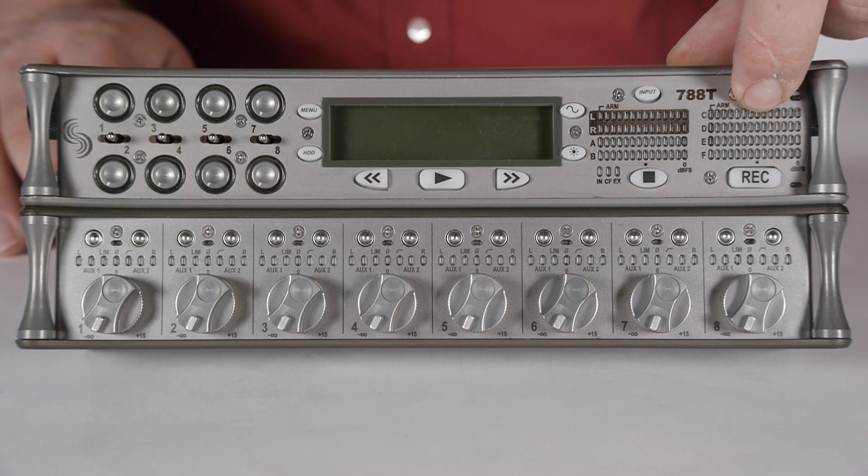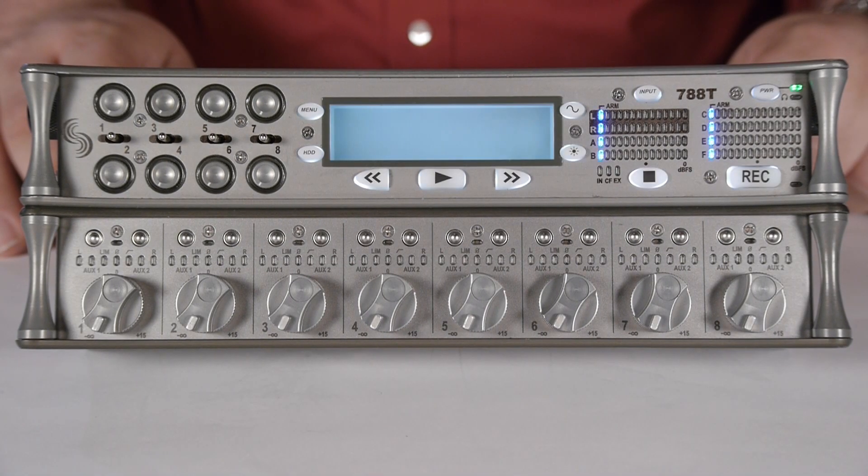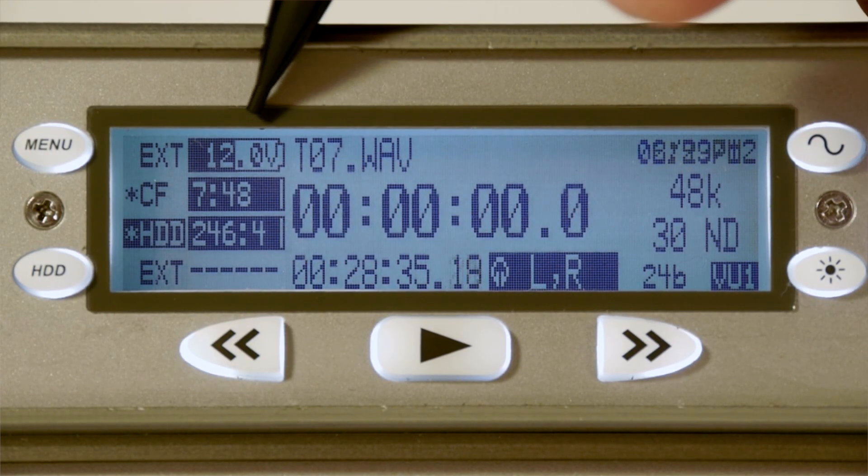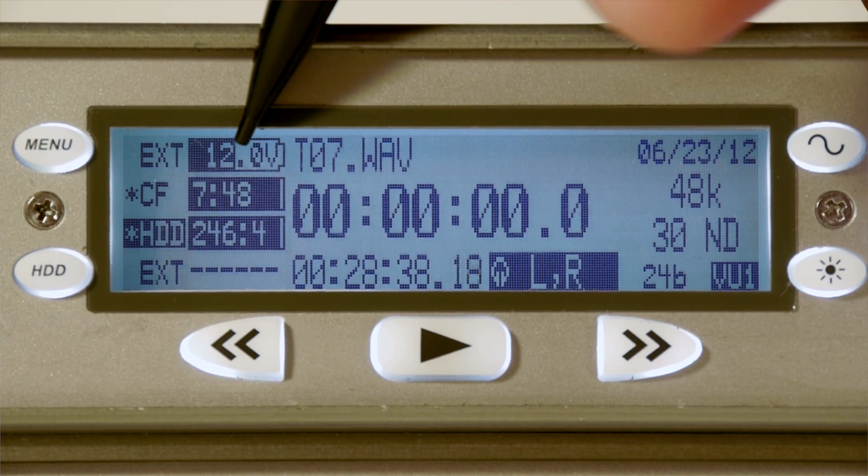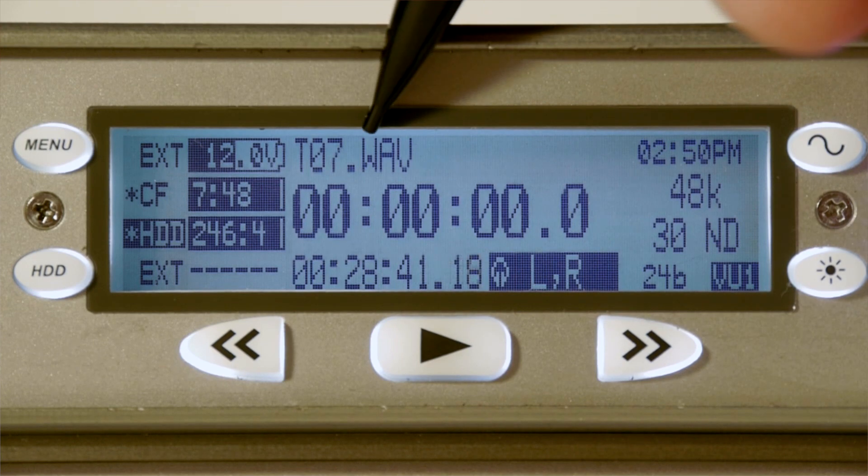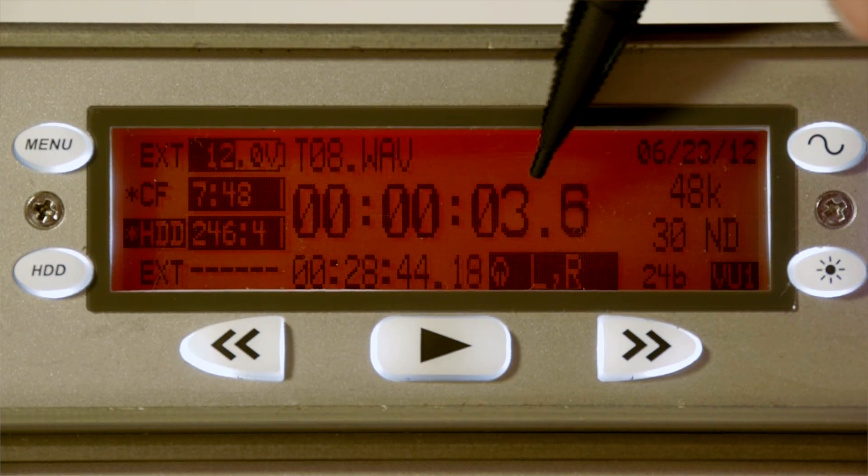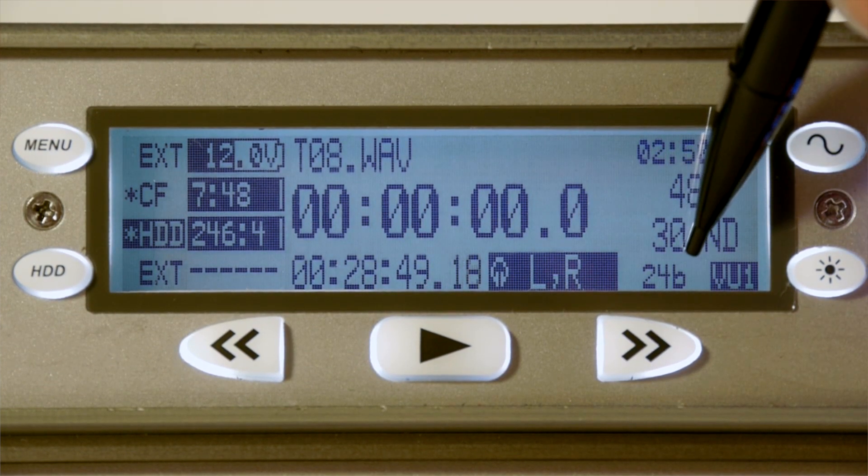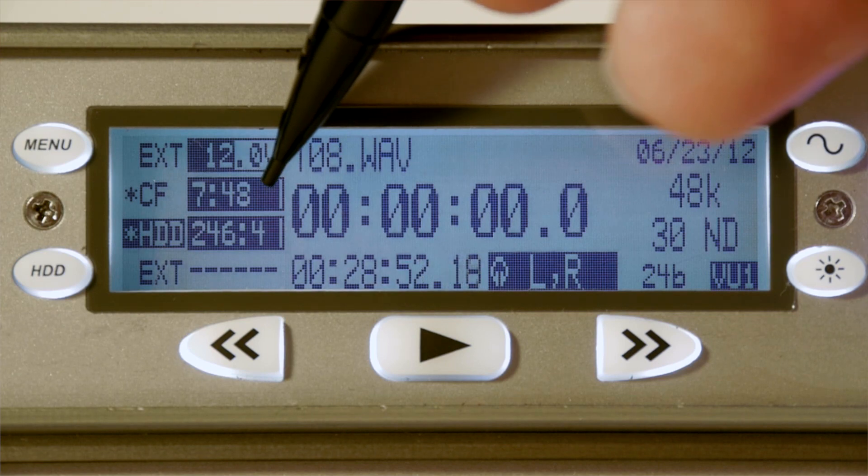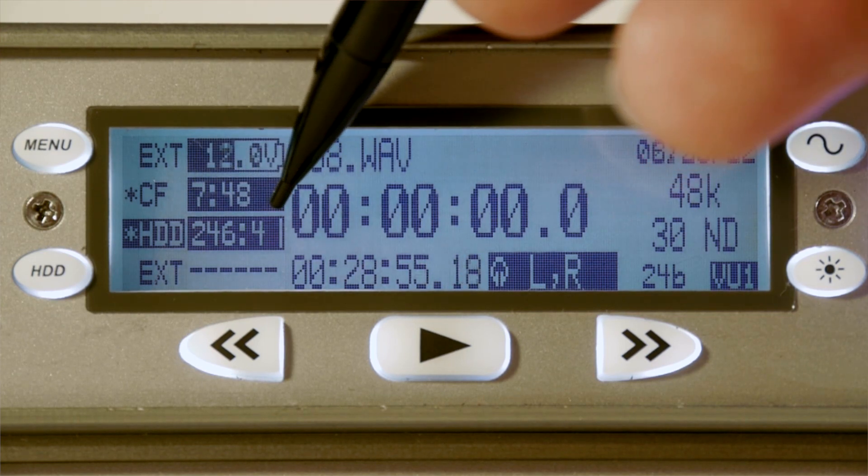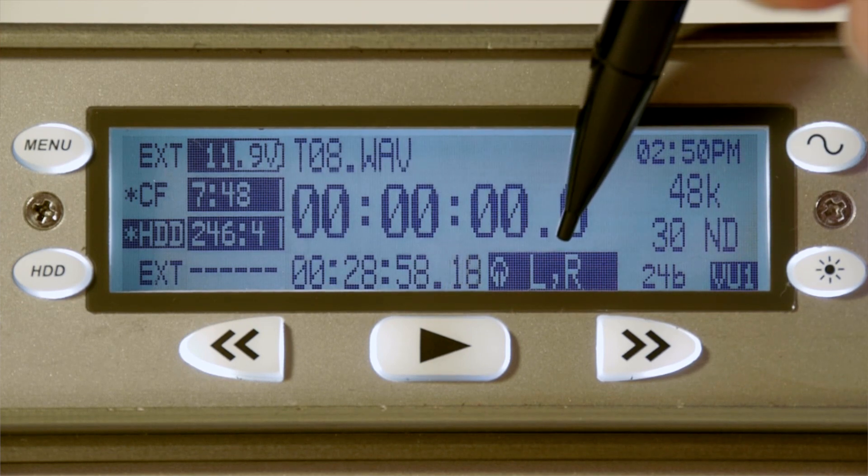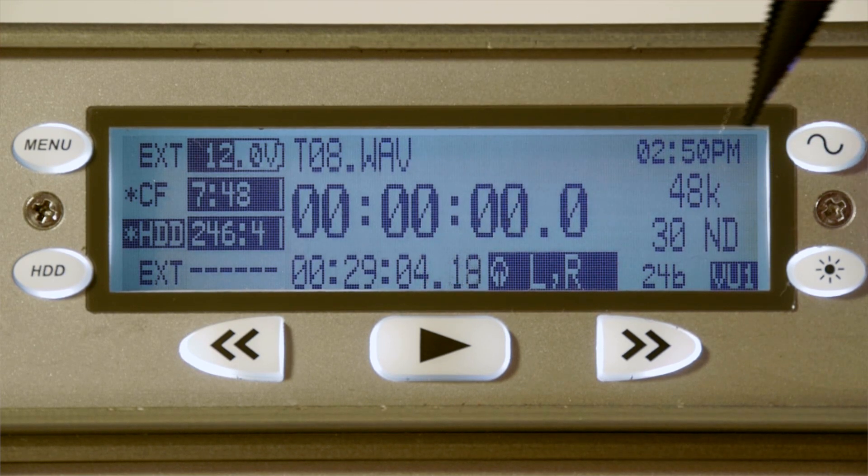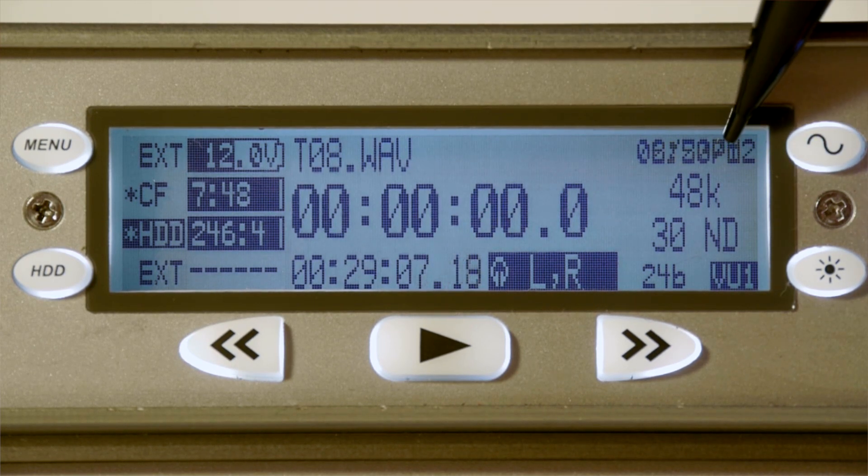To power up the 788T, press and hold the power key for more than one second. After it's done loading, you'll notice it go into its main screen. This screen shows you battery voltage level, take number and file name, record time for files being recorded, sample rate, timecode frame rate, and bit depth indicator. It shows and highlights the media that's selected for record and displays remaining record time available. It displays which tracks or inputs your headphones are currently listening to. It shows you time code generated or received. And last but not least, it shows you time and date.